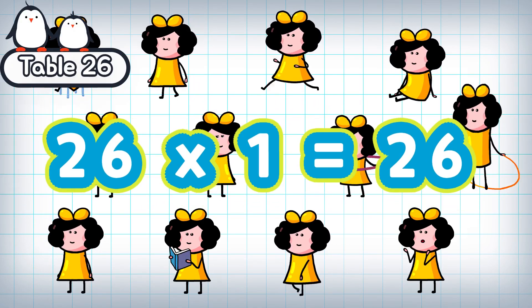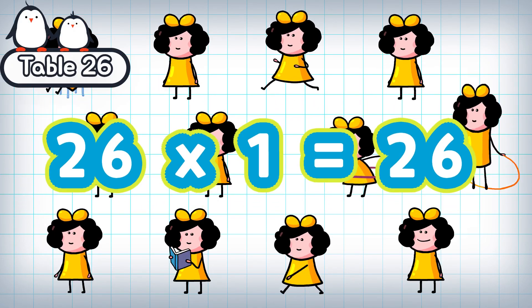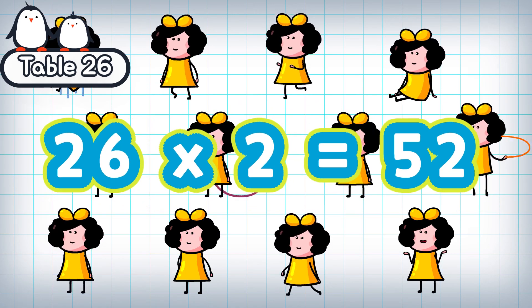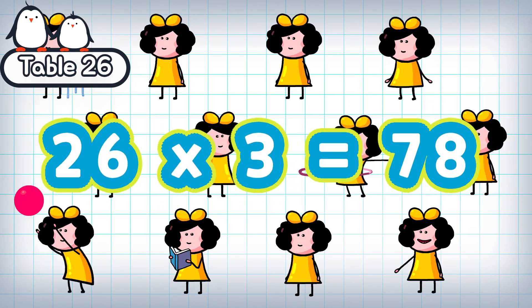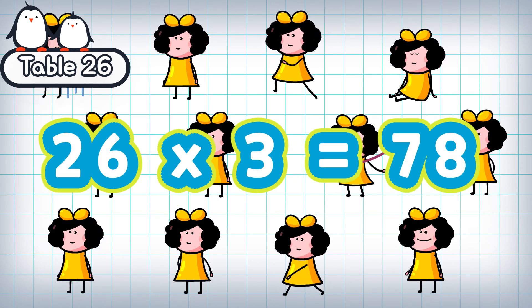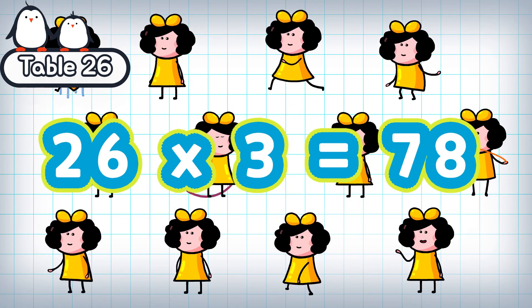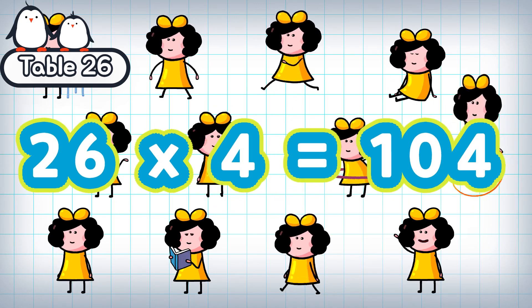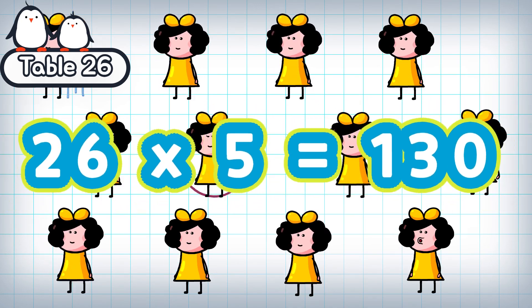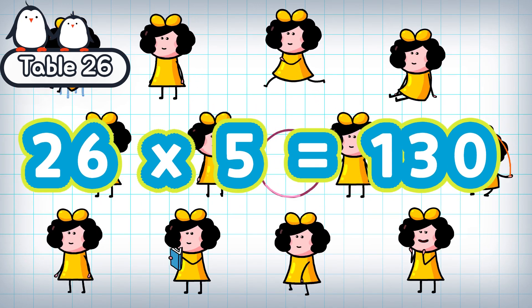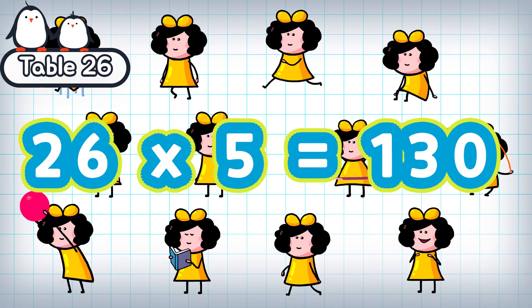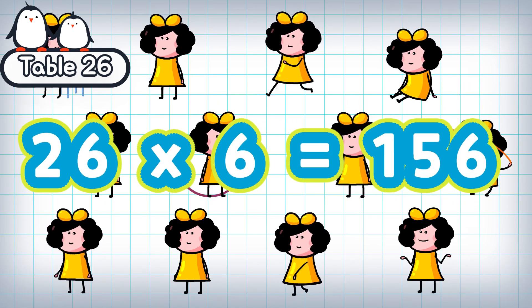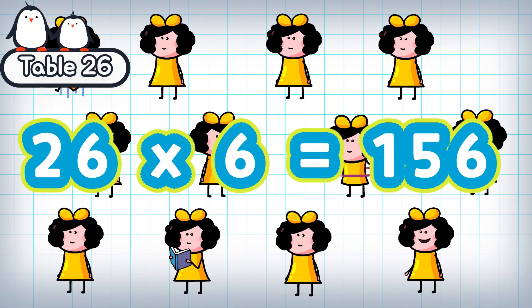26 times 1 is 26. 26 times 2 is 52. 26 times 3 is 78. 26 times 4 is 104. 26 times 5 is 130.